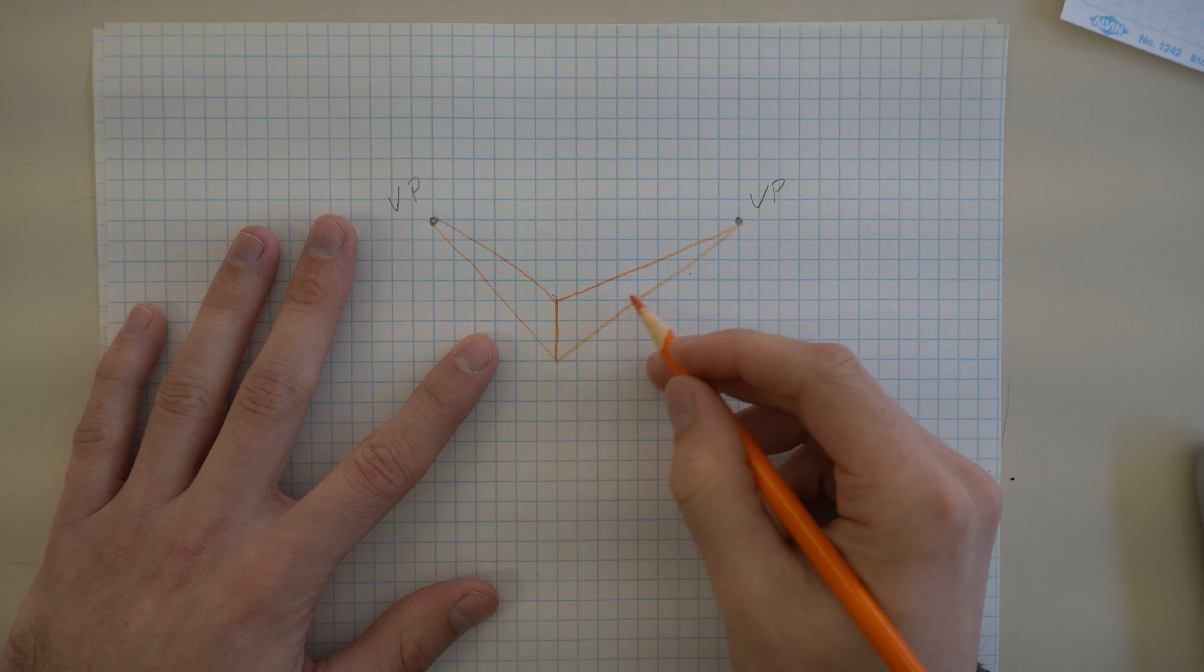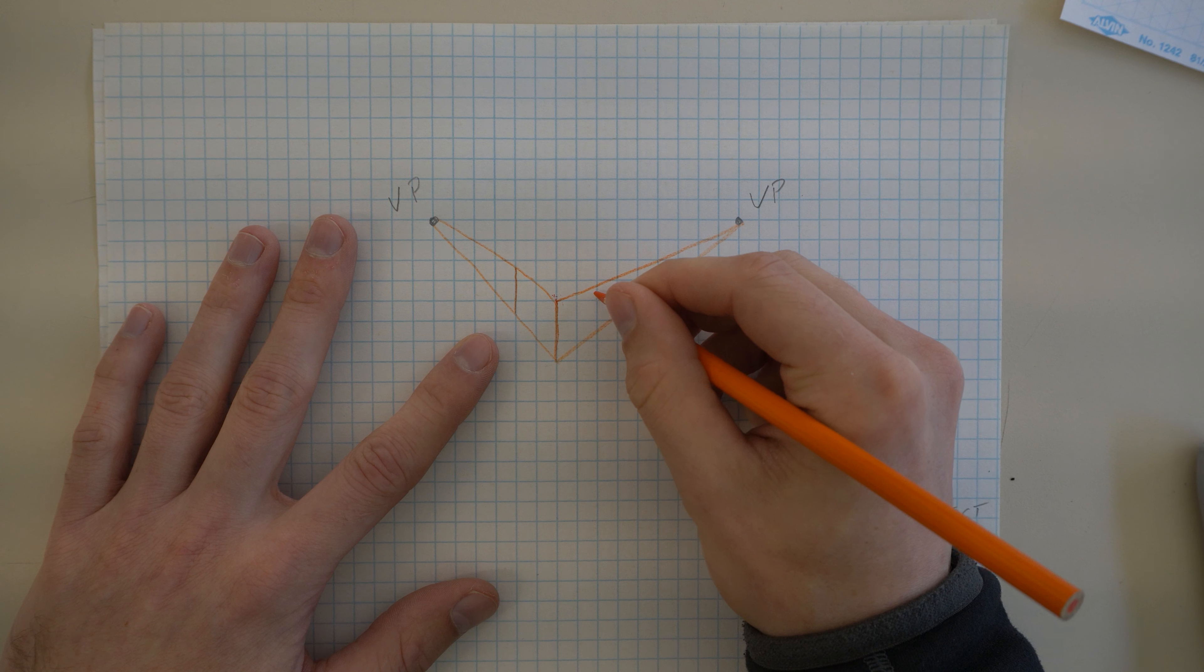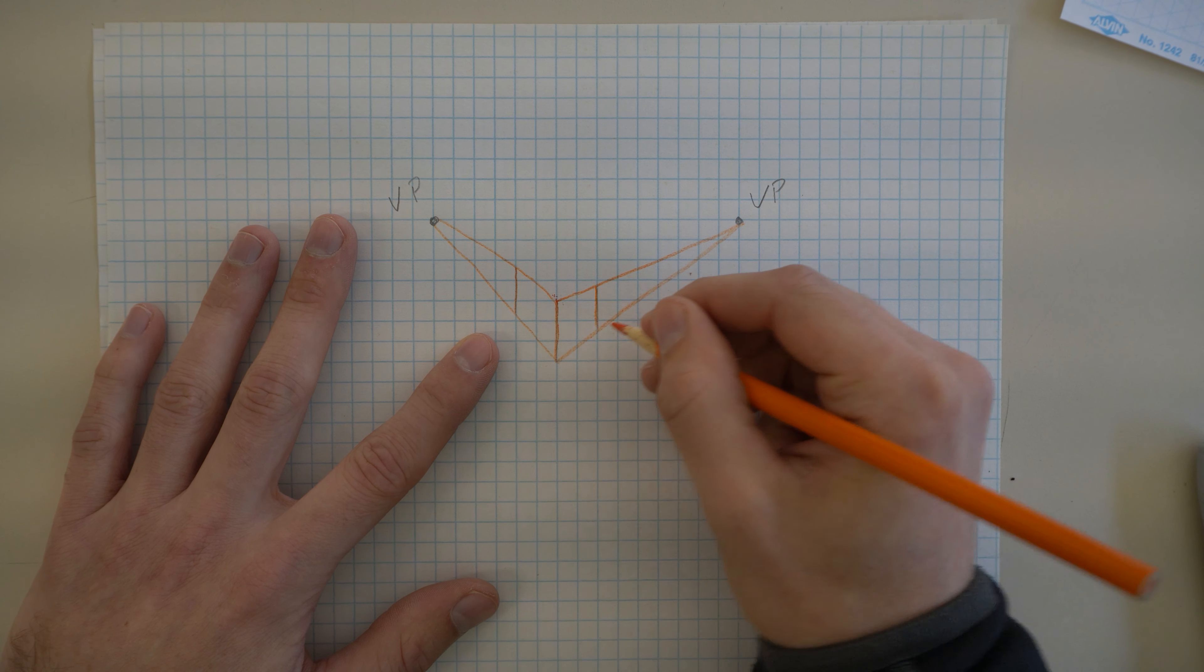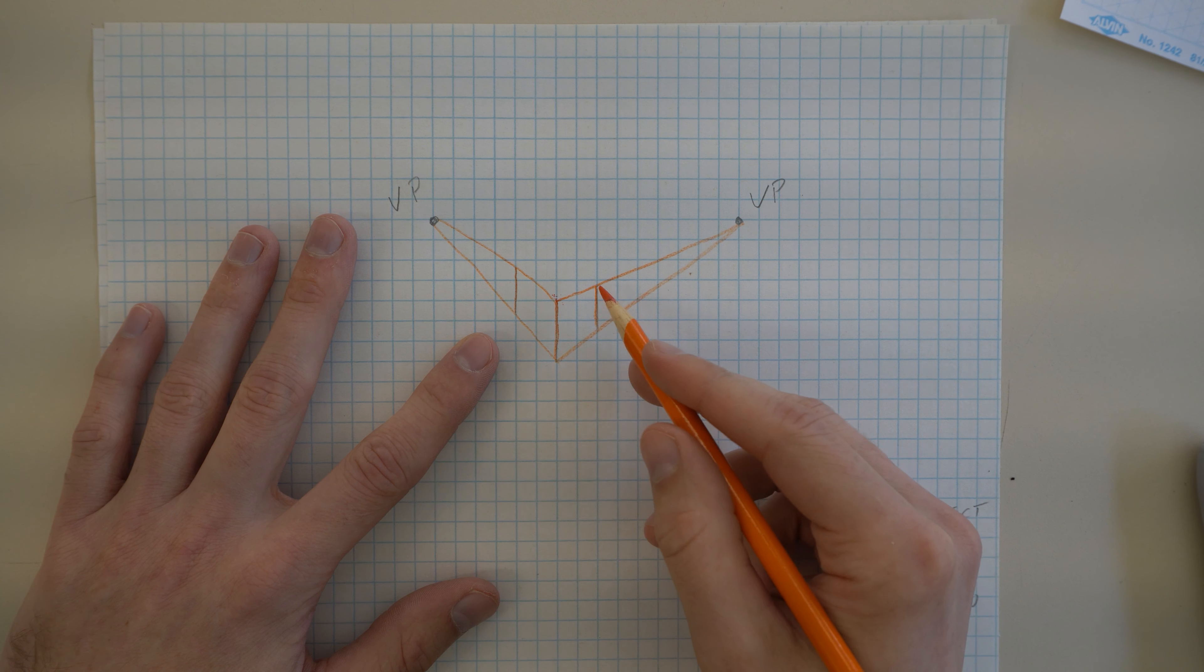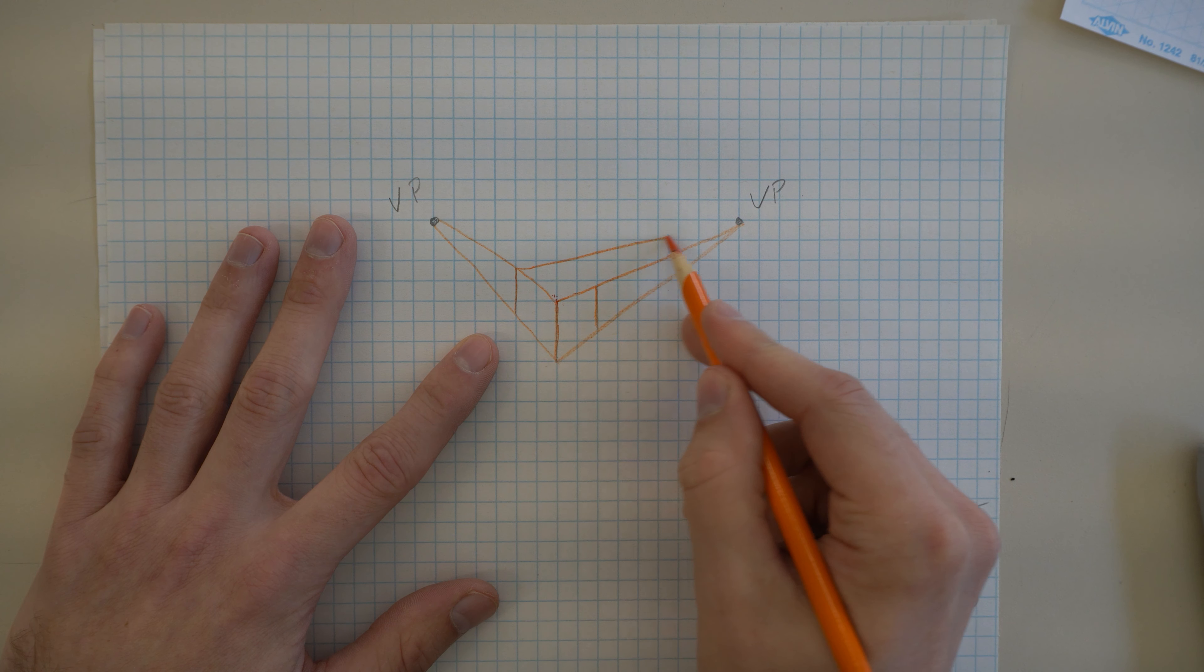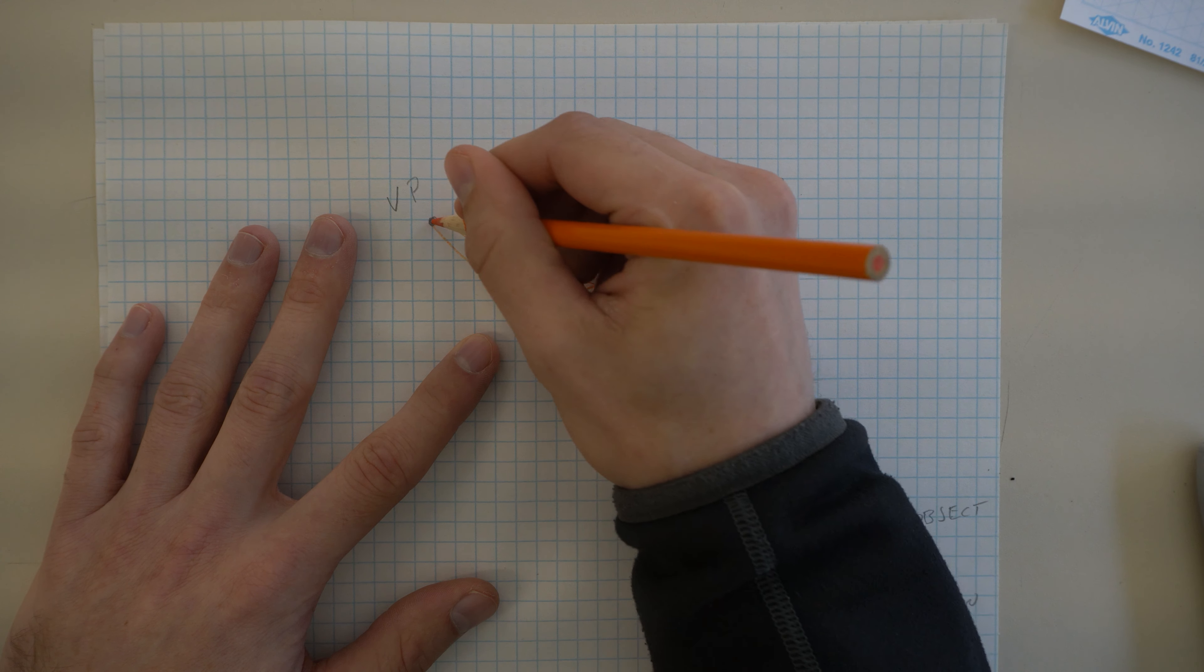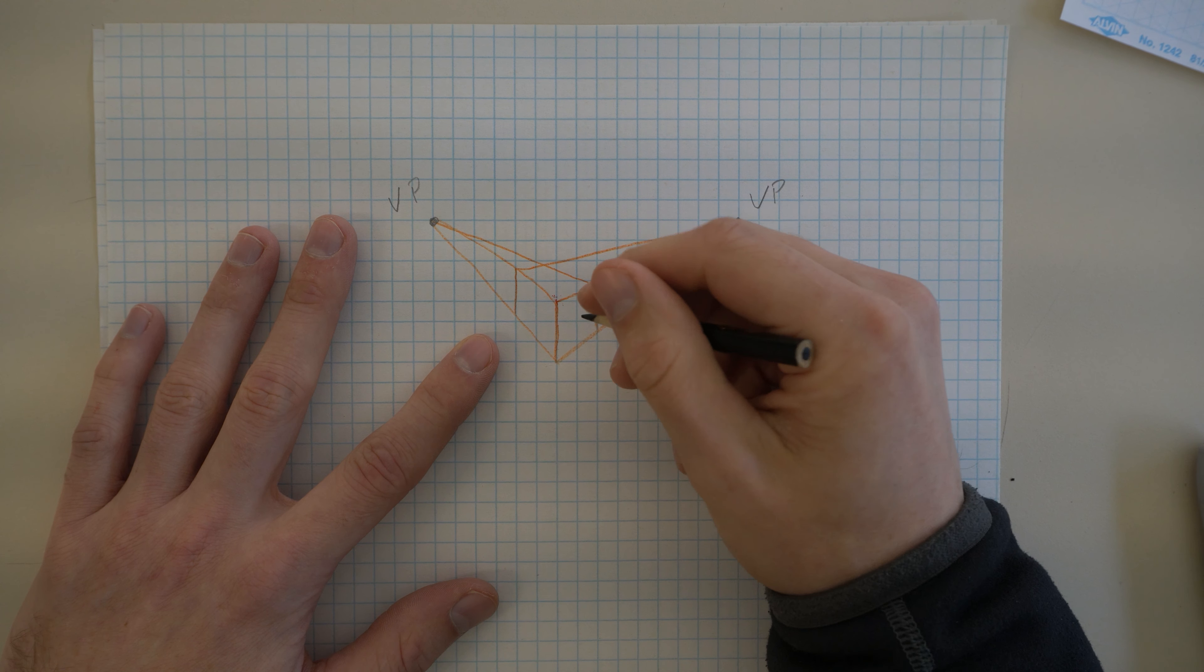We then get to decide the depth of the box. This is where proportion and everything come in. Just go back and decide, you know, this looks like it's good depth. That is the depth of the box. And then on the top, these are going to connect over to the other vanishing point. And that is how you make a very simple box with two-point perspective.